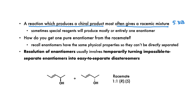It's possible to use special reagents or enzymes to get one pure enantiomer, or mostly one enantiomer, but this can be both difficult and expensive. How do you get only one pure enantiomer from a racemate?